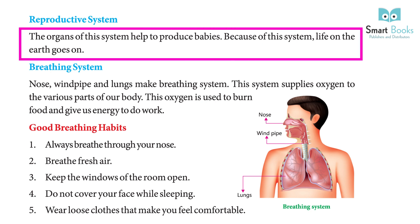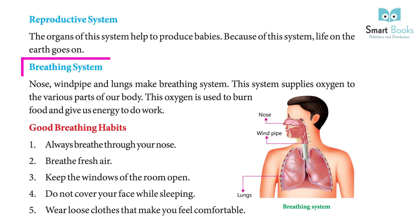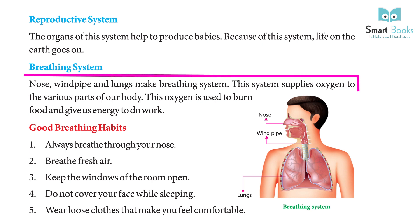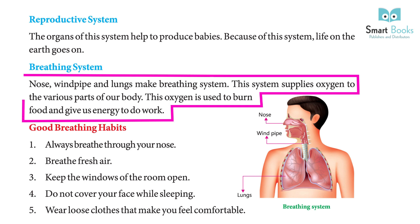Reproductive system: The organs of this system help to produce babies. Because of this system, life on Earth continues. Breathing system: The nose, windpipe, and lungs make up the breathing system. This system supplies oxygen to the various parts of our body.